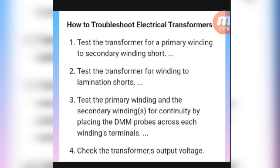Test the transformer for a primary winding to secondary winding short test. Test the transformer for a winding to the lamination short test. Test the primary winding and the secondary windings for continuity by placing the DMM probes across each winding terminals.